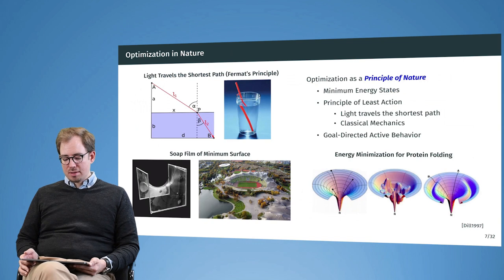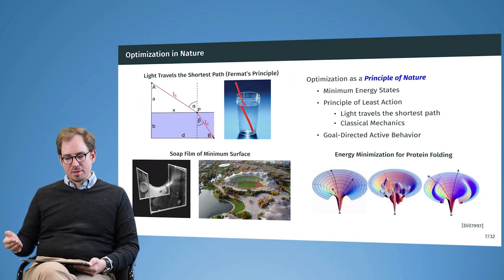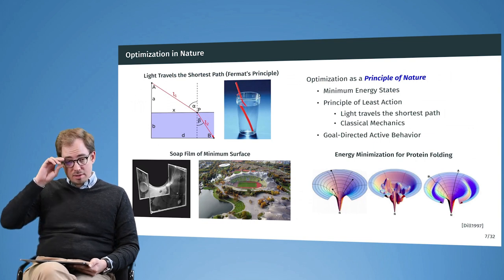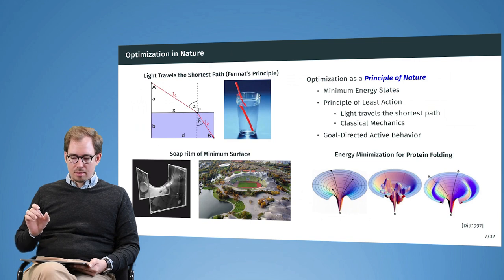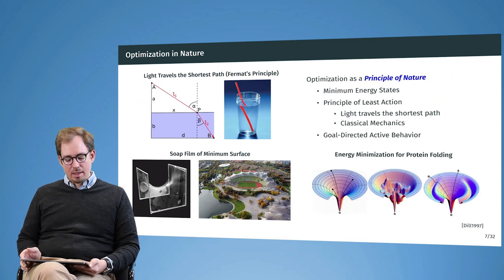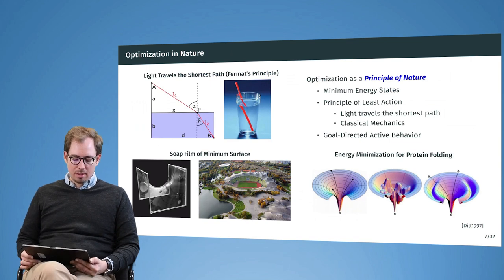Now optimization, as we have seen it so far, these were all man-made models and man-made problems that were solved. But also optimization happens quite naturally in the physical world. There are quite a few examples where nature is doing an optimization without any human involvement or human invention. For example, light is always traveling the fastest path.